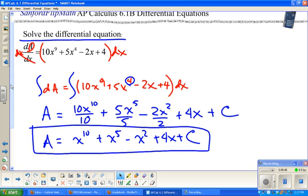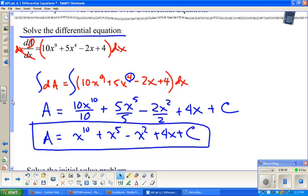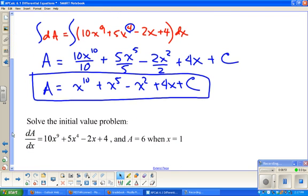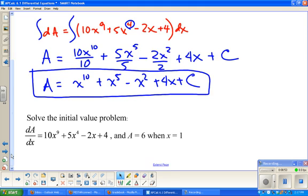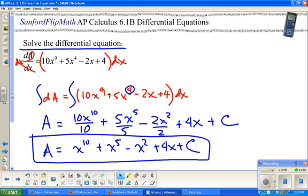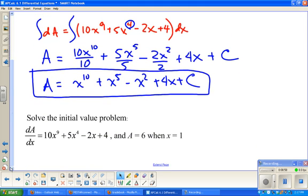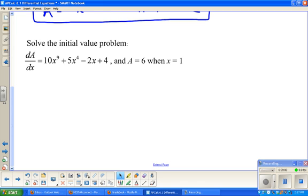So we're going to do the corresponding initial value problem with this. And we'll just keep doing that. So it's the exact same problem. 10x to the 9th plus 5x to the 4th minus 2x plus 4. The only distinction is I'm giving you an initial value. I'm telling you an ordered pair. (1, 6).